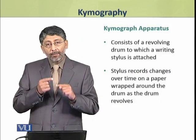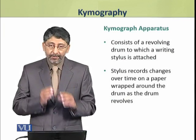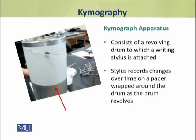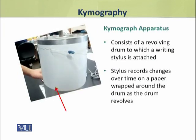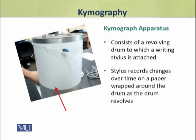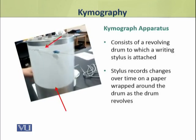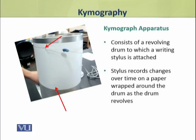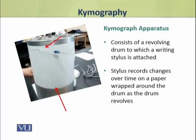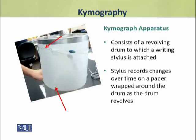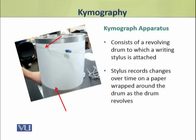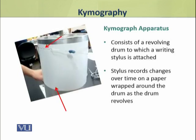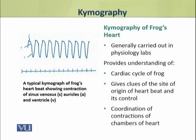A Kymograph apparatus consists of a revolving drum to which a writing stylus is attached. The stylus records changes over time on a paper which is drawn around the drum. As the drum revolves, the writing pen and stylus produce the graphs.